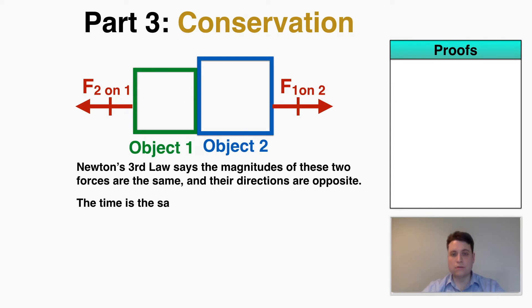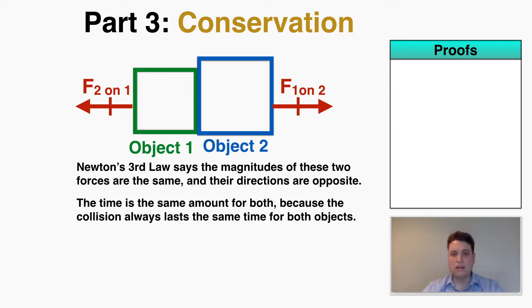I also know that the time that the collision takes is the same for both objects — that's intuitive. If two objects are both in a collision, the collision can't possibly take longer for one object than it does for the other. So based on Newton's third law, when any two objects put a force on each other, that force always has the exact same magnitude and opposite direction, and those two forces apply to each object for the same amount of time.